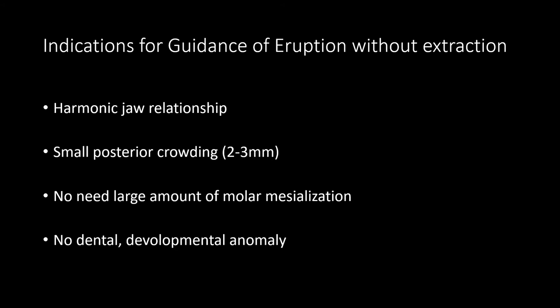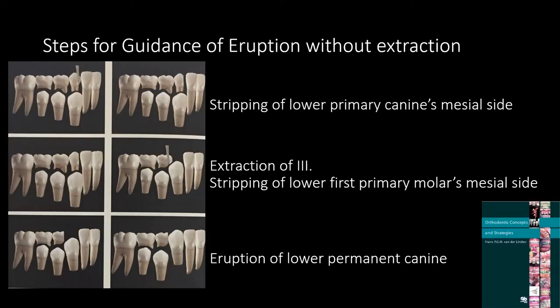The indications for guidance of eruption without extraction are: harmonic jaw relationships, small posterior crowding, no need for large amounts of molar mesialization, and no dental or developmental anomaly. The procedure progresses as follows: stripping of the lower primary canine's mesial surface, extraction of the deciduous canines, stripping of the lower first primary molar's mesial surface, and eruption of the lower prominent canine.